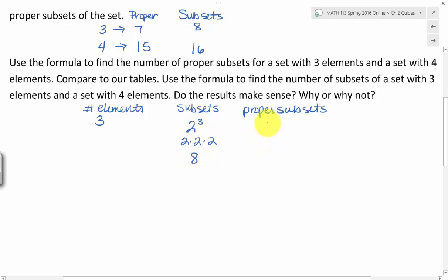And then remember the formula for proper subsets would be two to the third minus one. And so that would be eight minus one or seven. And that's if I have three elements in my set.